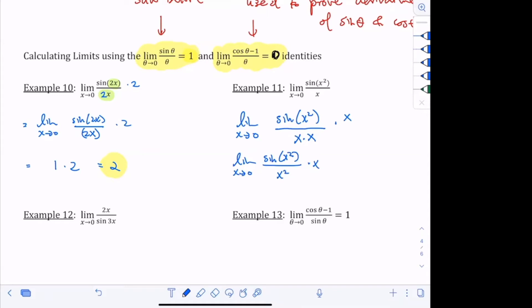And really, I can split that into the limit as x goes to 0, sine of x squared divided by x squared times the limit as x goes to 0 of x. And the first part is going to 1 and the second part is going to 0 and 1 times 0 is equal to 0. So that's going to be my second one. Does that make sense?